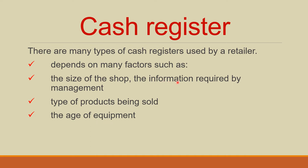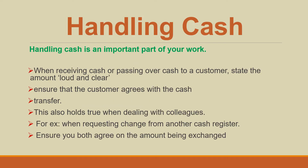Other factors include: the information required by management and what information is required by the customer; the type of products being sold — what kind of products you are selling affects the type of cash register needed; for example, in a car showroom the cash register used would differ; and the size and type of equipment, such as electronics or POS machines. You can use software as well.